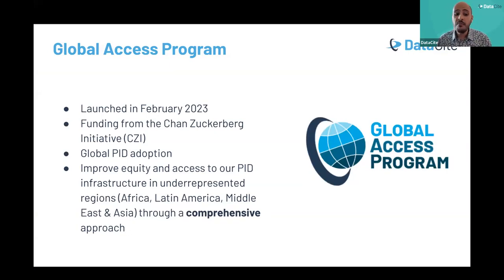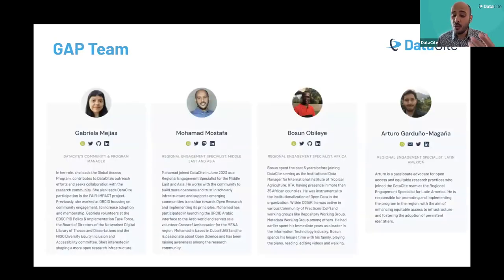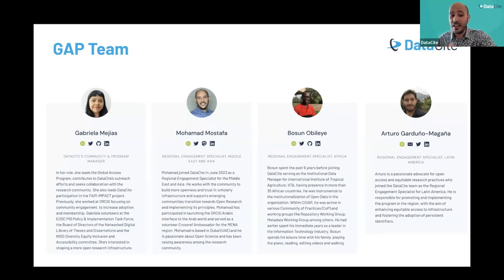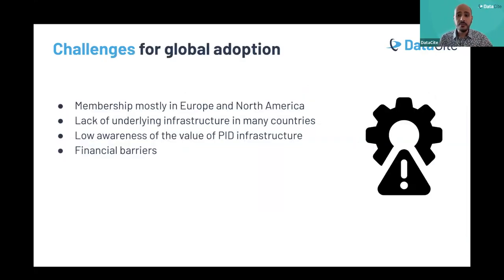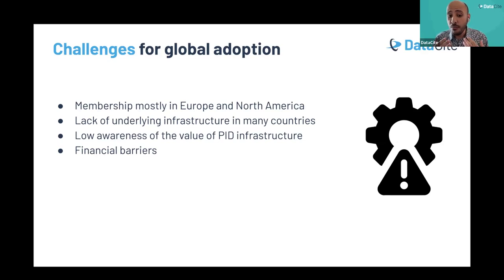Now I'm going to talk about one of our strategic initiatives launched this year: our Global Access Program (GAP). We launched it in February 2023 through a grant from the Chan Zuckerberg Initiative. Our aim is to increase global adoption and improve equity and access to our PID infrastructure in underrepresented regions such as Africa, Latin America, Middle East, and Asia. Our GAP team is led by Gabriela Mijas, with my colleague Busun managing Africa, Arturo managing Latin America, and I am responsible for the Middle East and Asia. The challenges for global adoption include membership being mainly from Europe and North America, lack of underlying infrastructure, low awareness of PID value, and financial barriers.